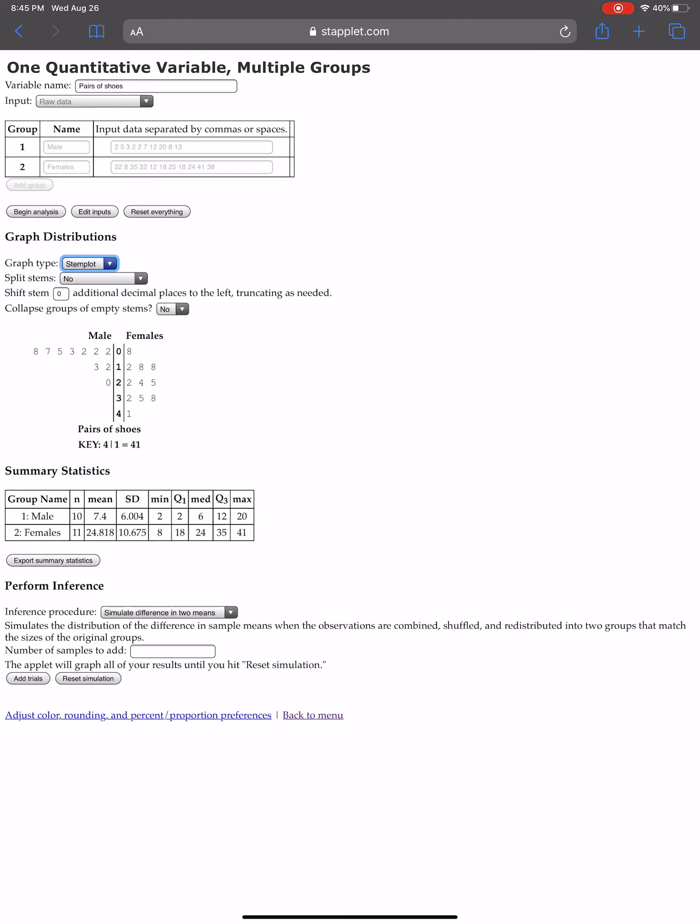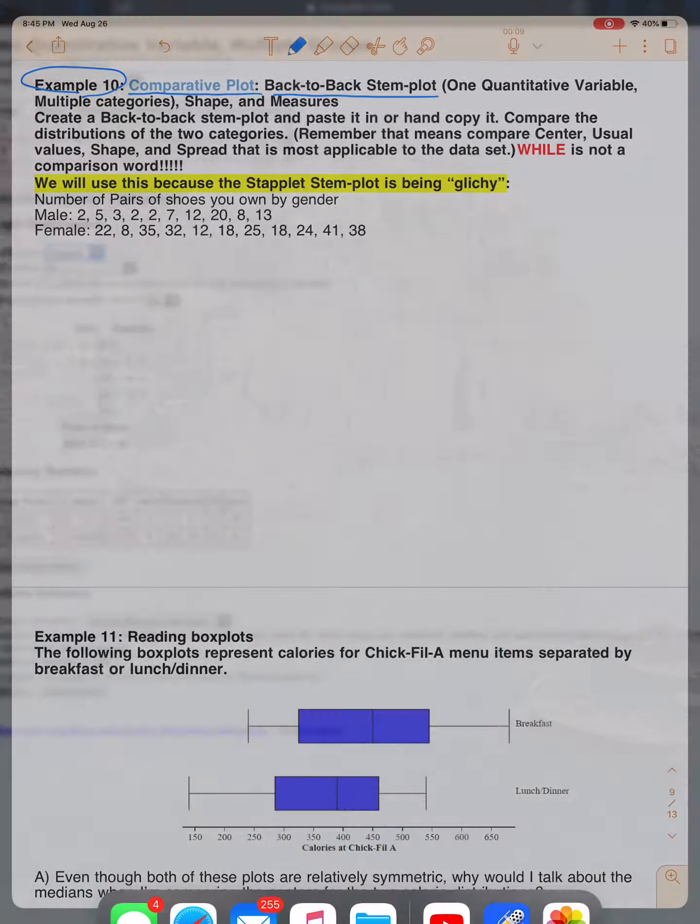So if you'll notice, you get a stem plot now that's got stuff on both sides of it. So you need to use your snipping tool or write out by hand what you're going to write down for this.